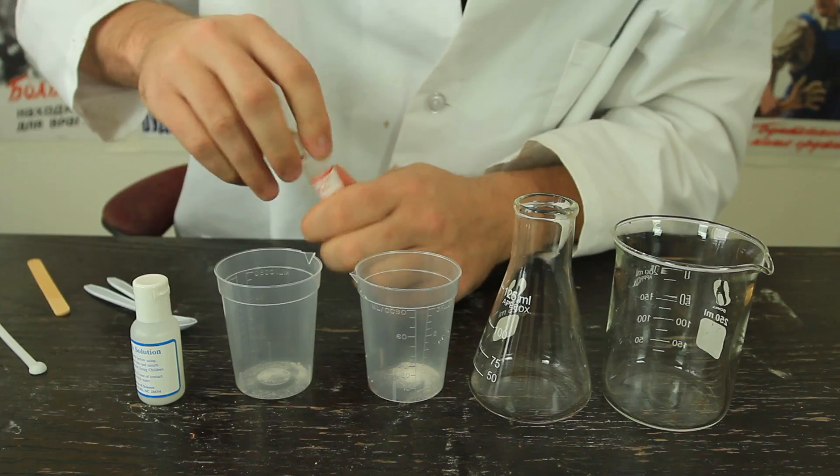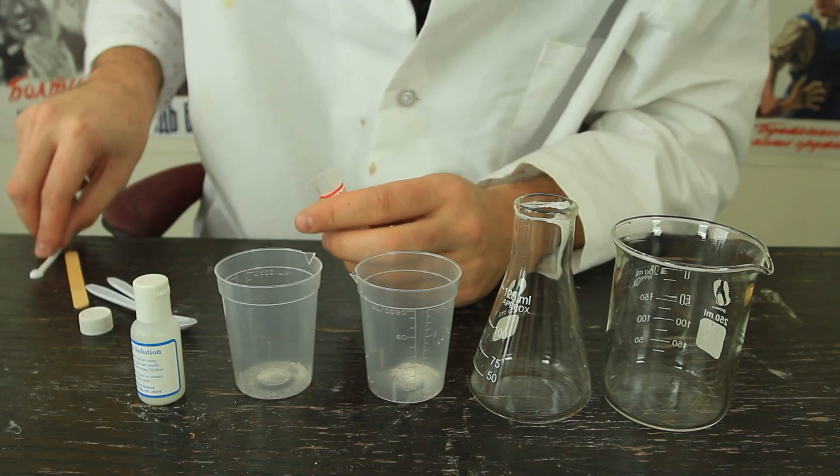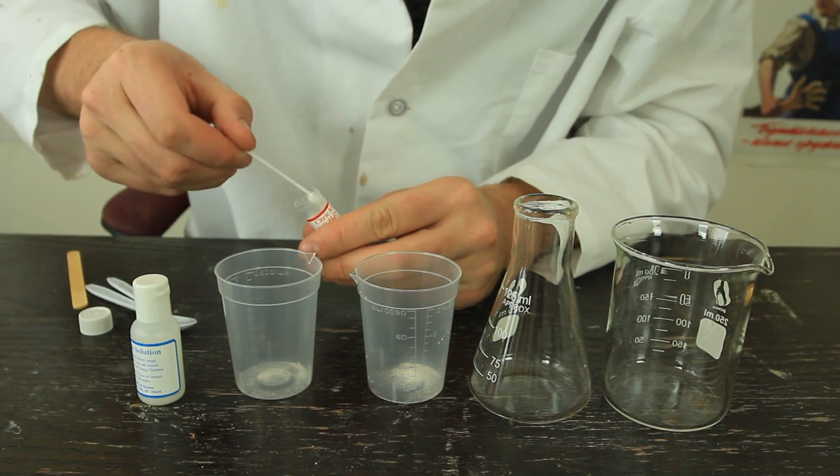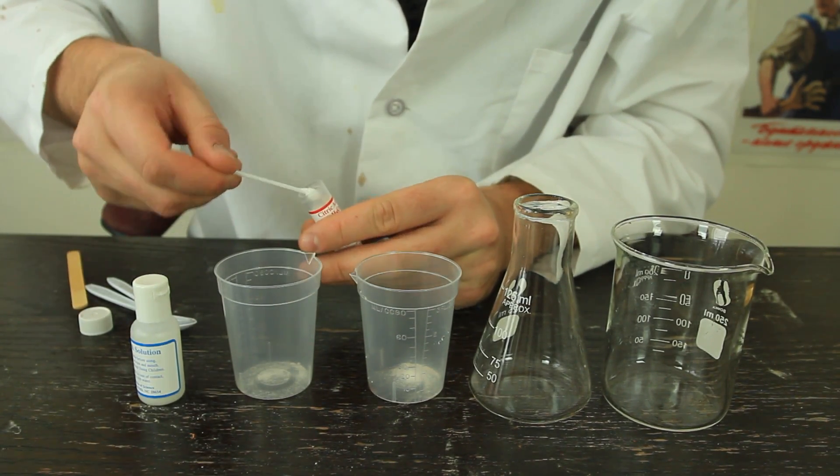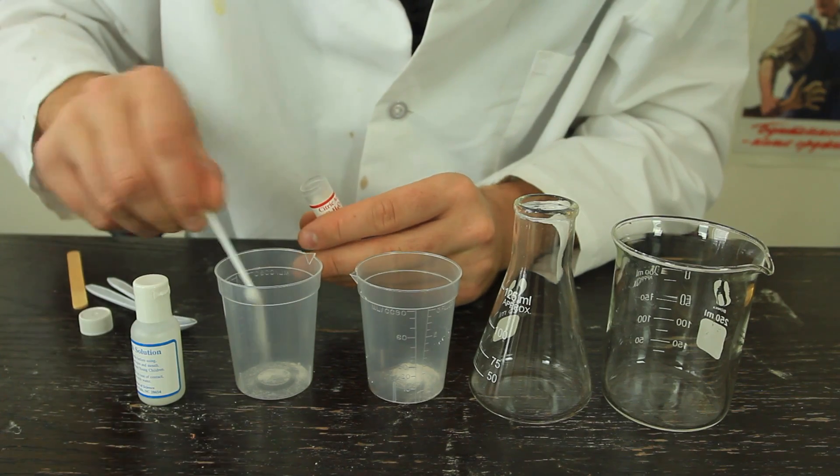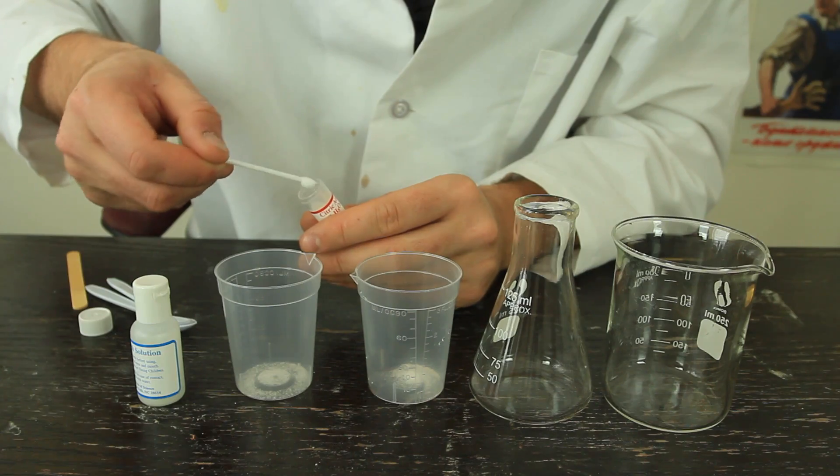and put it in there. Then we're gonna grab citric acid, and grab two small full spoons of citric acid. One, and two.